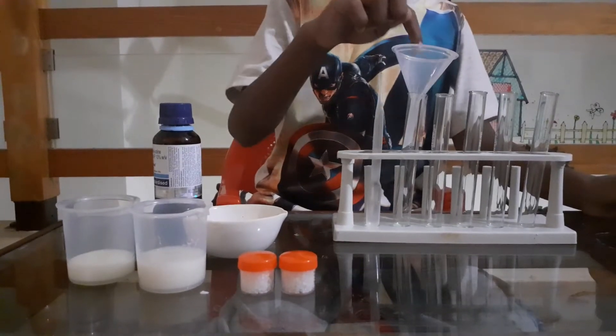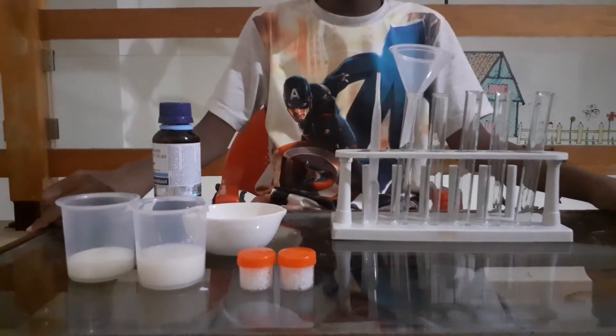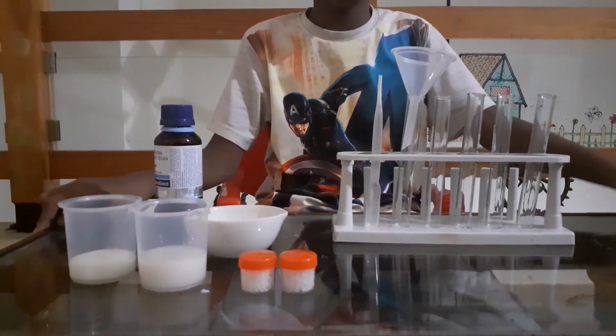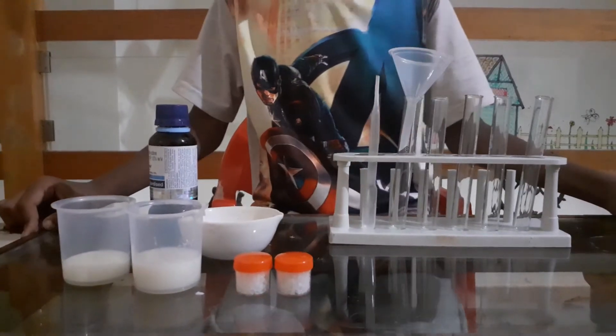What we're going to do is put the food item in here, then add the iodine. We're going to test one type of carbohydrate called starch. So let's get into the experiment.